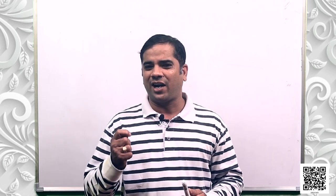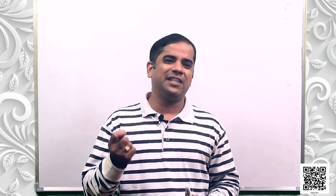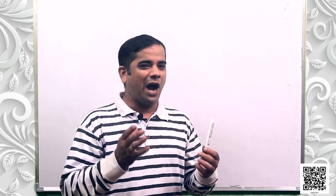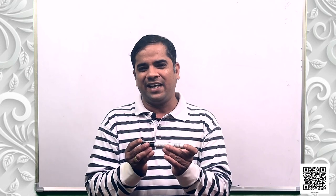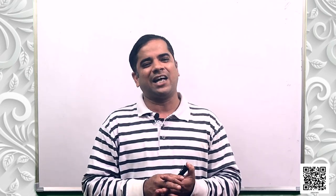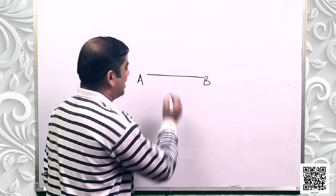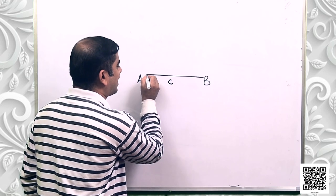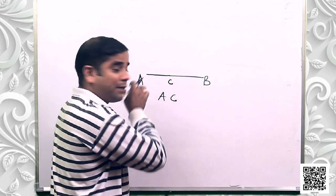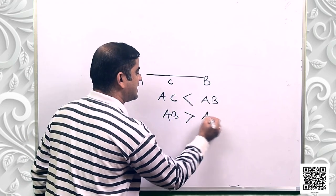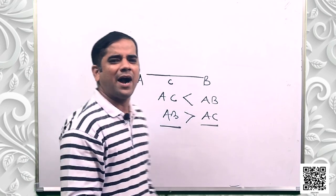The fifth axiom says that the whole is greater than the part. For example, take a chocolate and have a bite — the remaining piece is part of that chocolate, and the part is obviously lesser than the whole. In terms of line segments: if AB is a line segment and C is a point on it, then AC is a part of AB, and AB is greater than AC. The whole is always greater than a part — it is a universal truth.